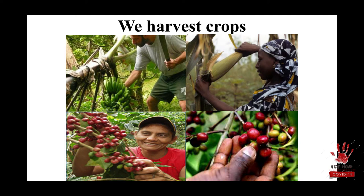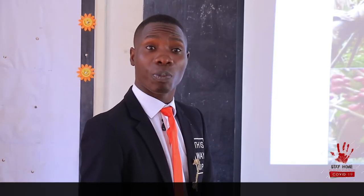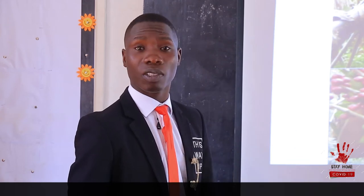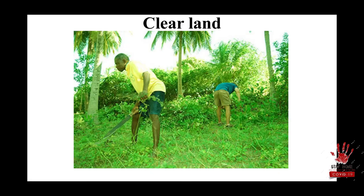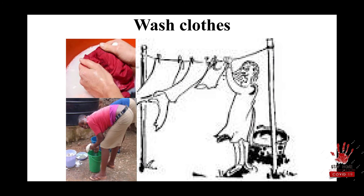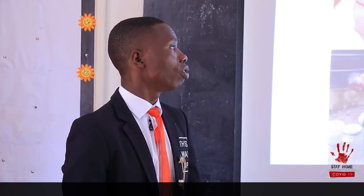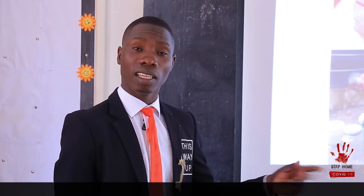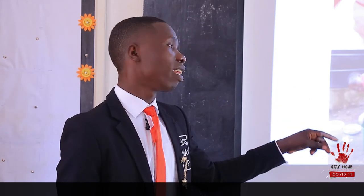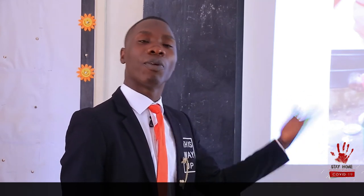We harvest our crops during dry season or during sunny days in order to dry the harvested crops. We also clear land during sunny days. We also wash clothes during sunny weather, as I explained — this heat from the sun increases the rate of evaporation so the water in the clothes evaporates and it dries.